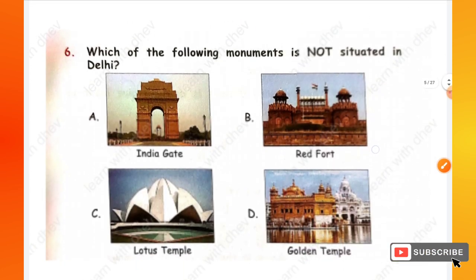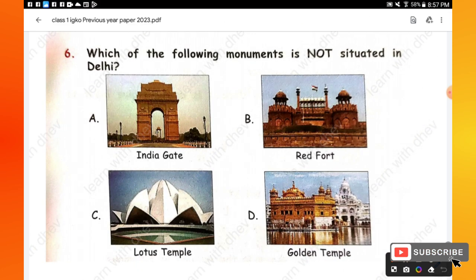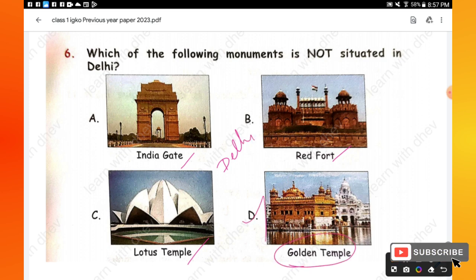Question 6: Which of the following monuments is not situated in Delhi? Options are: India Gate, Red Fort, Lotus Temple, Golden Temple. India Gate, Lotus Temple, and Red Fort are all situated in Delhi, whereas the Golden Temple is situated in Punjab, Amritsar. Hence option D is the right one — it is not situated in Delhi.